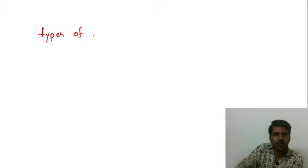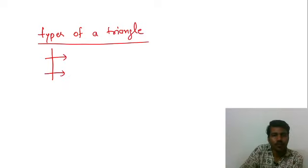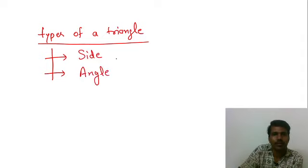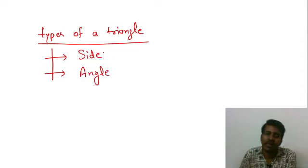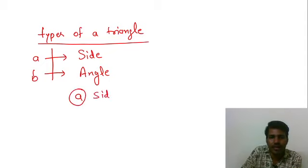Types of a triangle. It is of two types. The first one is according to side, and second is angle based. Based on sides, there are three triangles. Let's discuss A point and B point. First of all, let's take side basis.